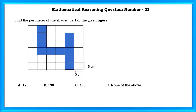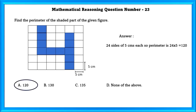Question No. 23: Find the perimeter of the shaded part of the given figure. The shaded portion has 24 sides of 5 cm each, so the perimeter is 24 × 5 = 120 cm.